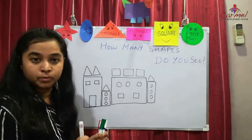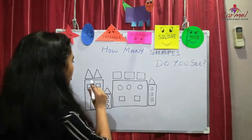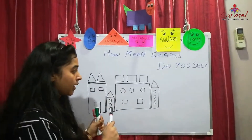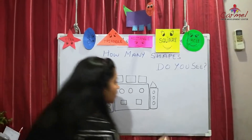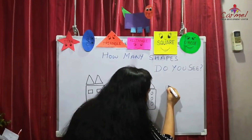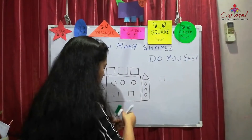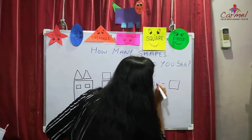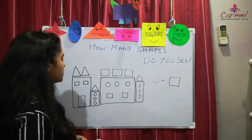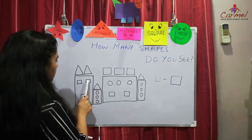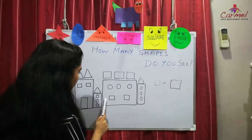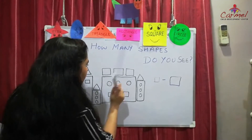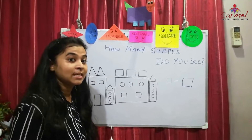Yes! Now what we are going to do is count how many squares, how many circles, and how many rectangles, and write the numbers in the box. How many squares are there? Let's count: one, two, three, four, five, six, seven, eight. There are 8 squares. Write 8 in the box.